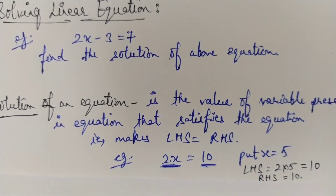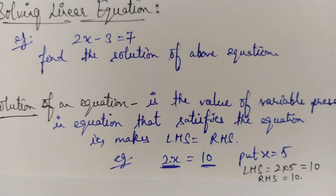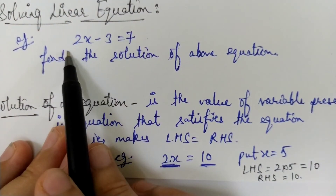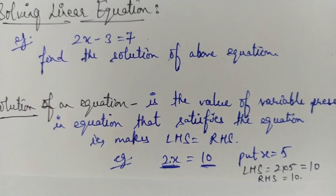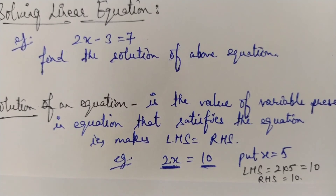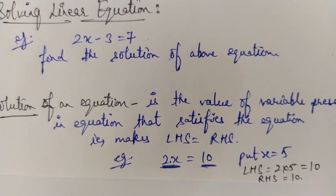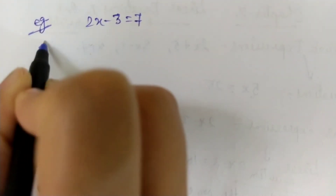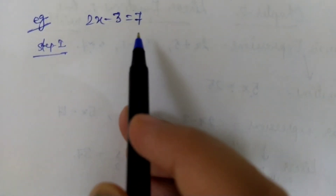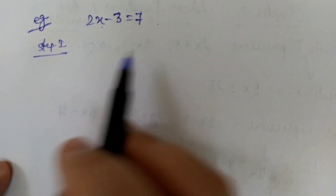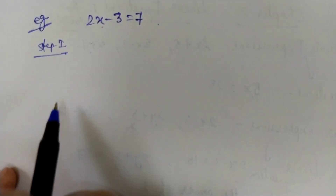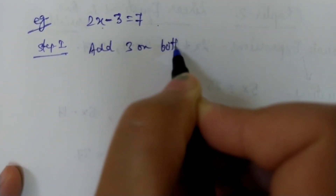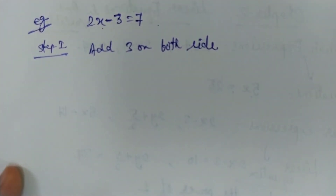Solving a linear equation means finding the value of the variable that will satisfy the equation — meaning both the left side and the right side must be equal; there must be no imbalance. They must be balanced at all times. So for our example 2x minus 3 equals 7, in step 1 you need to keep both sides balanced while performing operations. There is a minus 3 here, so we will add 3 on both sides. Whatever you do to the equation, you must do it on both sides — it is compulsory.